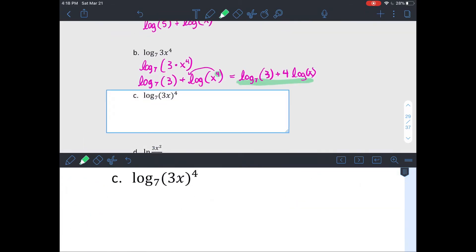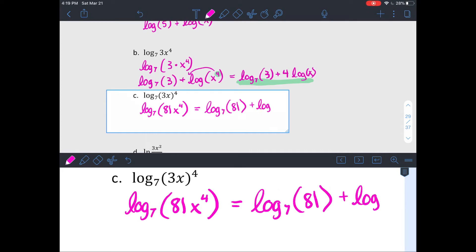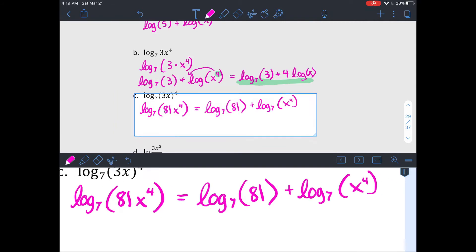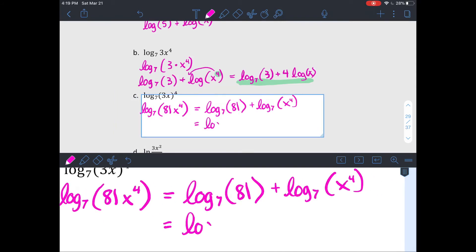C looks similar, except notice that in C, 3 and x were in parentheses. So both the 3 and the x were raised to the 4th. I'm going to make that 3 to the 4th into 81. And then it's going to go pretty similarly. But be careful whether there's parentheses or not because that is important. So this one can be written as log base 7 of 81 plus 4 times log base 7 of x.